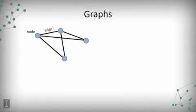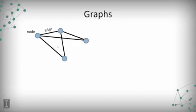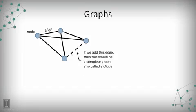A graph consists of nodes and edges. In this case, we have four nodes and five edges connecting these nodes. The nodes represent a data item and the edge represents a relationship between two data items. If we add one particular edge, then every data item is connected to every other data item — we would call that a complete graph or a clique of these four nodes.